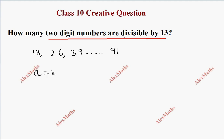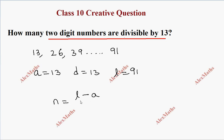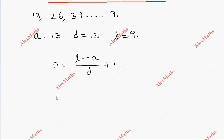The first term a is 13 and the common difference d is also 13. The last term L is 91. So using the formula: n = (L - a) / d + 1.